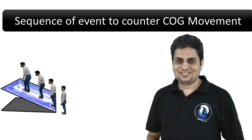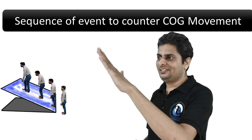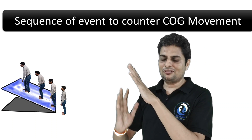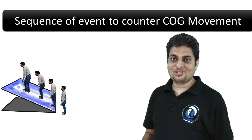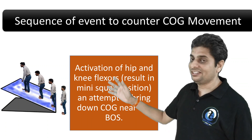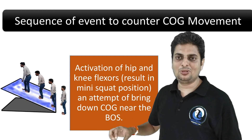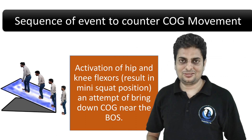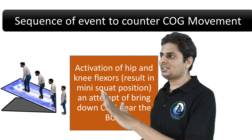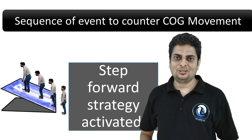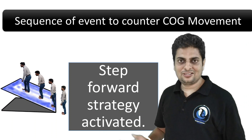If we progressively incline the surface further, suspensory activity starts: there is flexion of the hip and knee in an attempt to bring the center of mass nearer to the base of support. If we increase inclination even further, step strategies come into play.